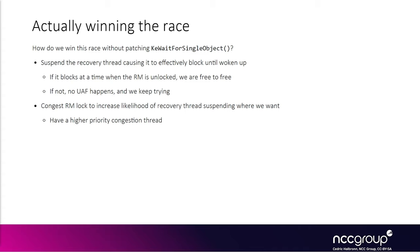The idea is we will try to make it hard for the recovery thread in the vulnerable function to actually lock the mutex when calling KE WaitForSingleObject so that it's waiting for it. At the same time, we will suspend that thread so it just hits a point where it will be asleep. At that point, we free the key enlistment, thinking we might have won the race, and then we only wake the thread up after. This becomes fairly similar to what we were doing with patching via WinDbg.